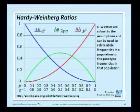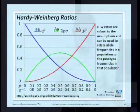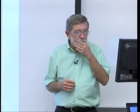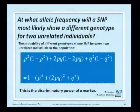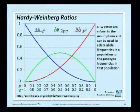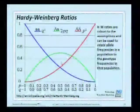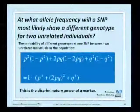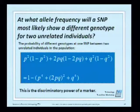Hardy-Weinberg, again, is basic probability of two random gametes fusing given that they come from the same population with allele frequencies. So we're talking about a single nucleotide polymorphism. At what allele frequency will a SNP most likely show a different genotype between two unrelated individuals? And you will remember I said before that it was 0.5, and mathematically you can calculate it and that would be the answer.